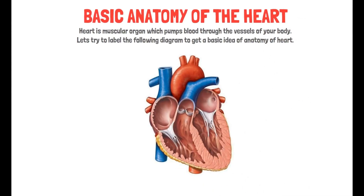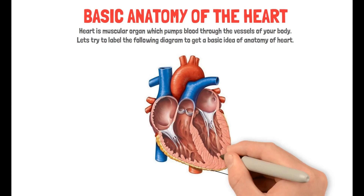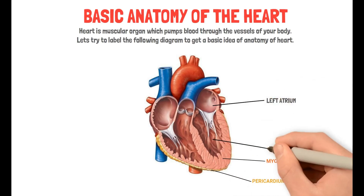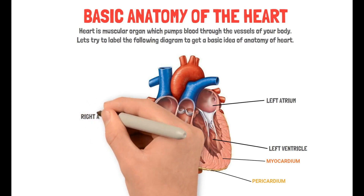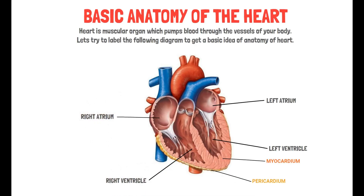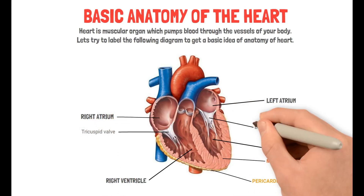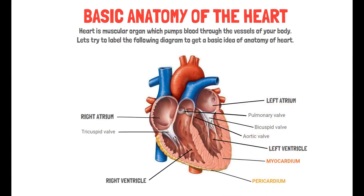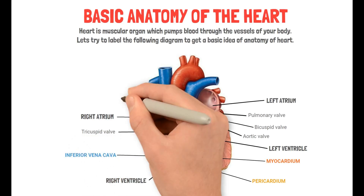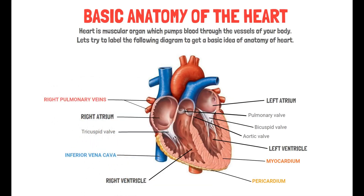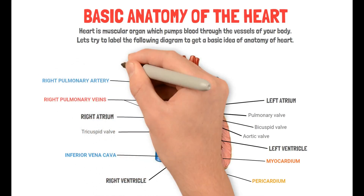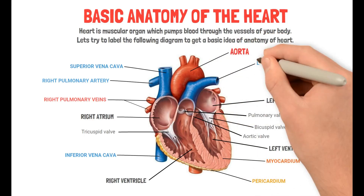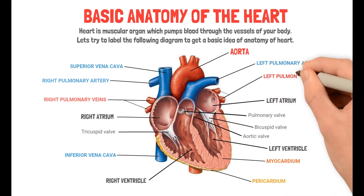Here we have a cross section of a human heart. This is the pericardium, the myocardium, the left atrium, the left ventricle, the right atrium and the right ventricle. We have the valves: the tricuspid valve, the bicuspid valve, the pulmonary valve and the aortic valve. We also have the inferior vena cava, the right pulmonary veins, the right pulmonary artery, the superior vena cava, and of course the aorta and the left pulmonary arteries along with the left pulmonary veins.